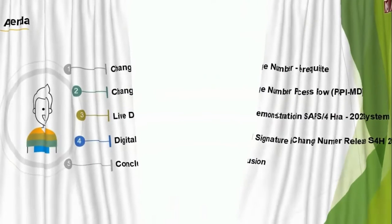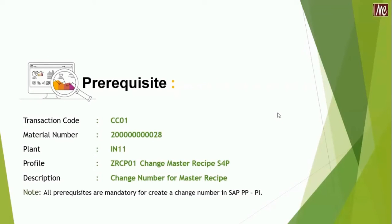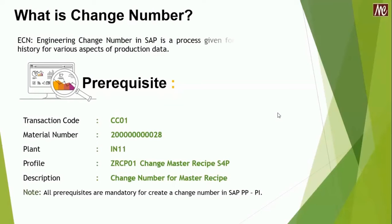First of all, we have to cross-check the prerequisites of the change number. Before going into the prerequisites line by line, let's understand what a change number is and where it is applied. Change number, commonly known as ECN — Engineering Change Number — is a process in SAP for recording the change history for various aspects of production data or process records.